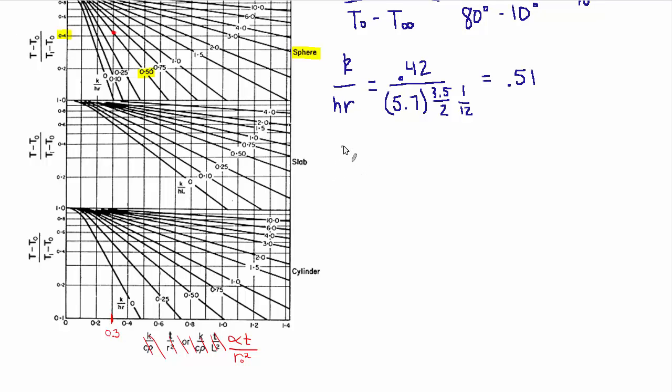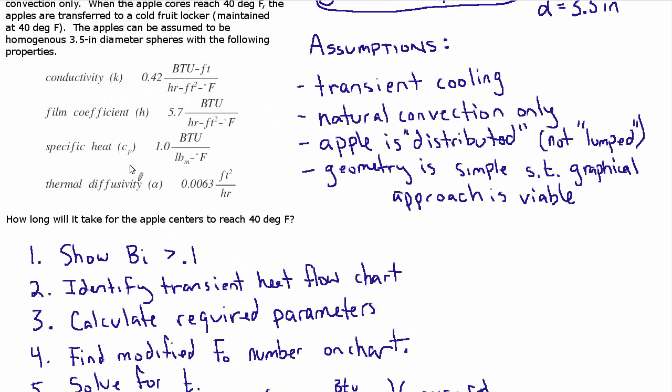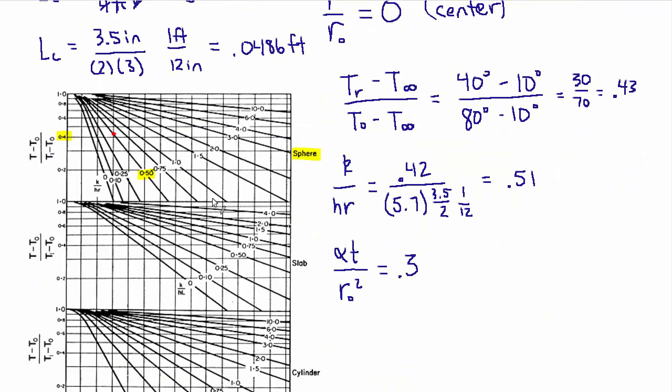So let's write that down. Alpha T over R sub 0 squared equals about .3. And now we know alpha, that's the thermal diffusivity which was also given to us, and we know the radius. So if you just pull this number out that's about .146 feet. So we can use that down here.